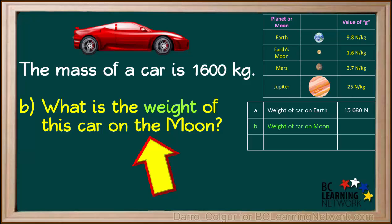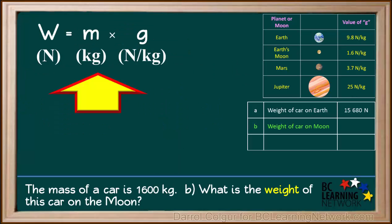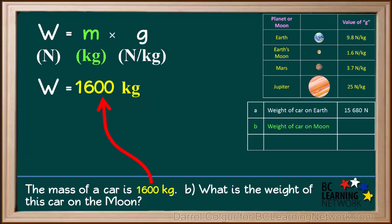Question B asks us for the weight of the car on the Moon. Starting with the formula w equals m times g, we substitute 1,600 kilograms for the mass of the car and 1.6 newtons per kilogram for the value of g on the Moon.